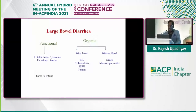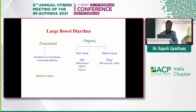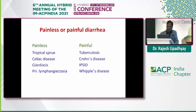For large bowel diarrhea, differentiate between functional diarrhea — the commonest, i.e., IBS diarrhea type — and organic diarrhea. Organic large bowel diarrhea is easier to diagnose when blood or mucus is present, pointing to IBD, tuberculosis, solitary rectal ulcer syndrome, or tumors. Painless diarrhea is typical of malabsorptive conditions, while painful diarrhea accompanies inflammatory conditions such as tuberculosis, Crohn's disease, and Whipple's disease.